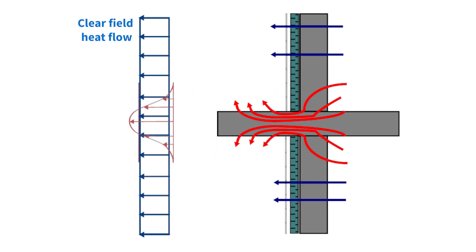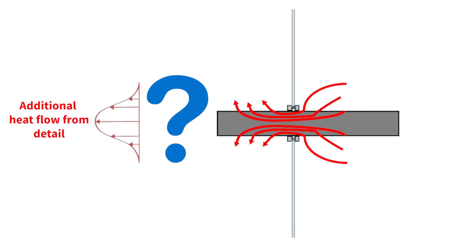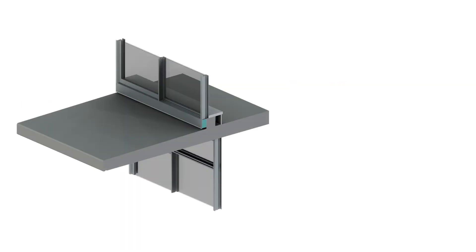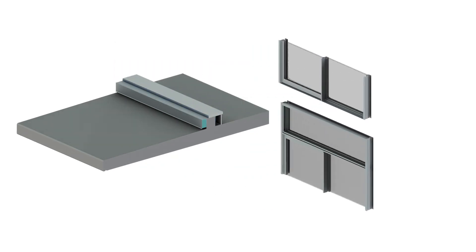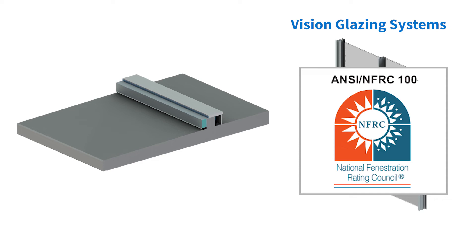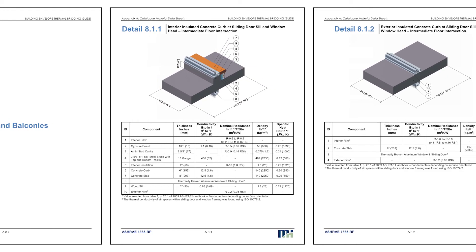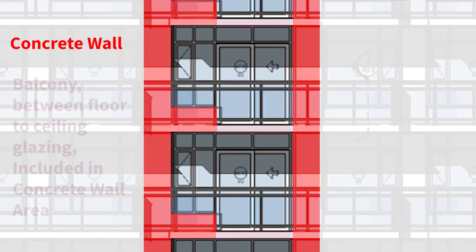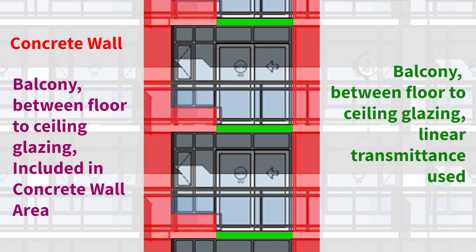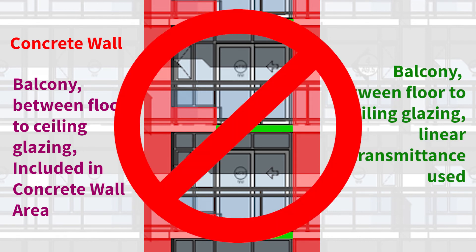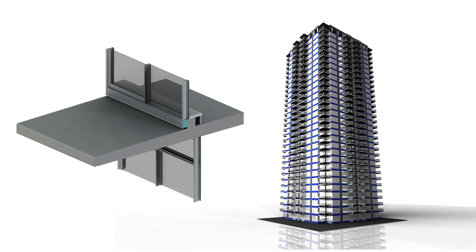Floor-to-Ceiling Glazing. Since linear transmittances are considered an additional heat flow to the clear field assembly, what do we do if there is not a clear field assembly? This happens with balconies with floor-to-ceiling glazing above and below, which is a common occurrence. Glazing system U-values are accounted for separately in energy standards and whole building energy models, so there is not an obvious clear field above or below balconies with floor-to-floor glazing. These types of assemblies are highlighted in Section 8 of Appendix A and B of the BETB Guide. If the balcony area is included with the adjacent clear wall takeoff and a linear transmittance is used, this will likely result in double accounting of the heat flow. However, there are options for these types of assemblies.